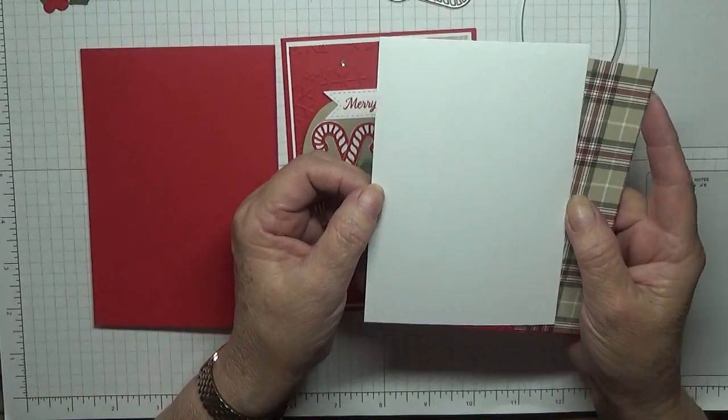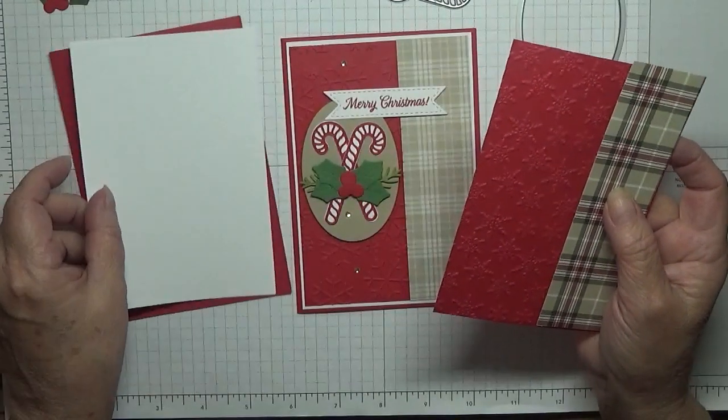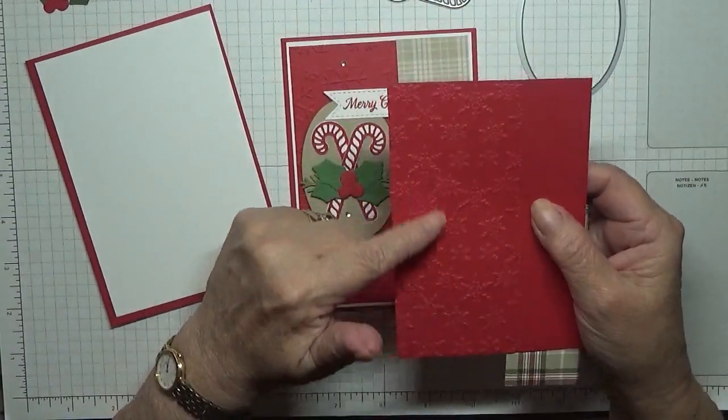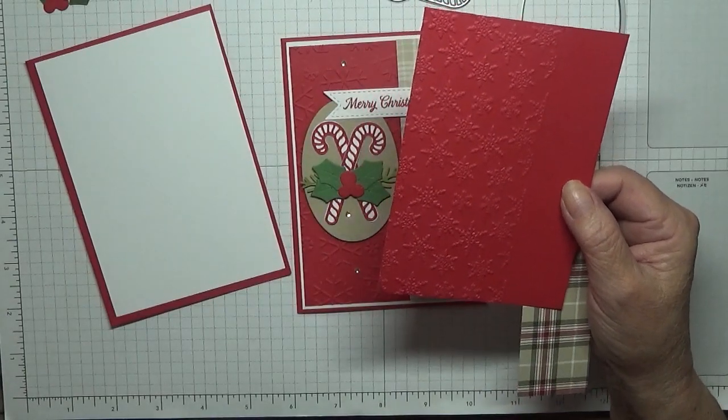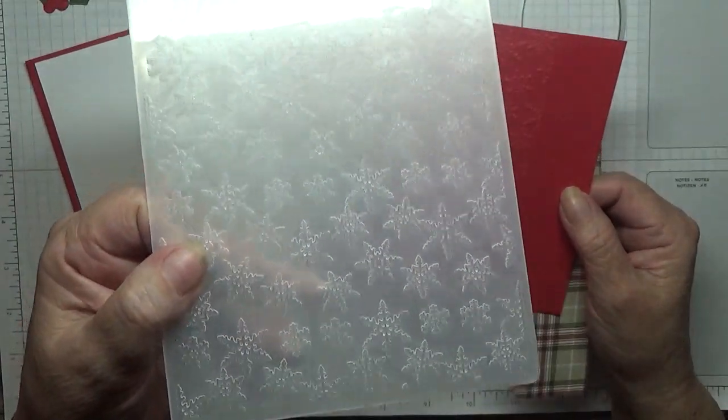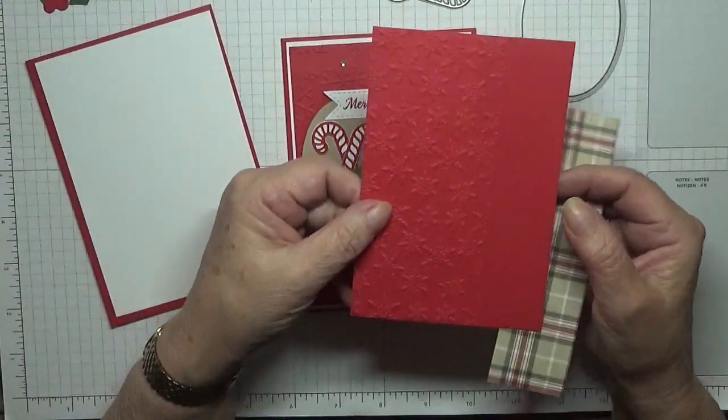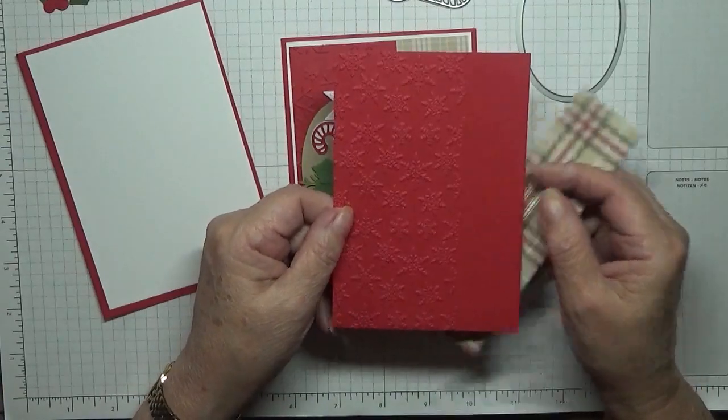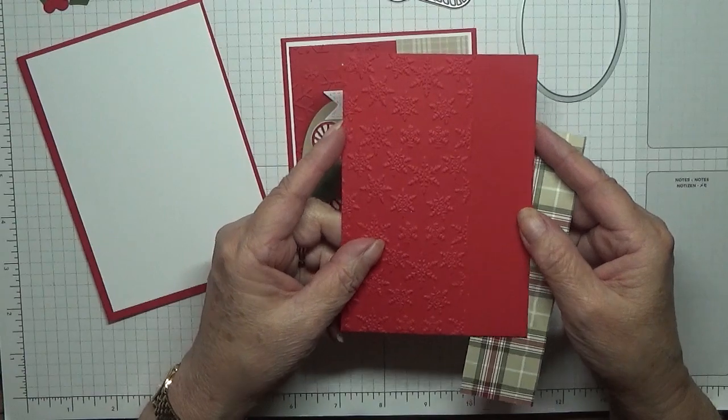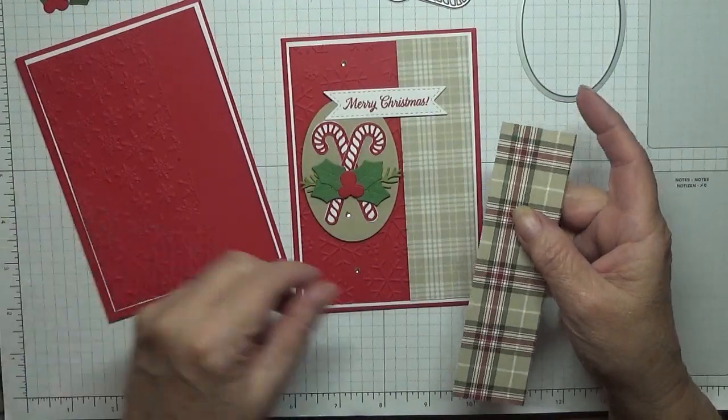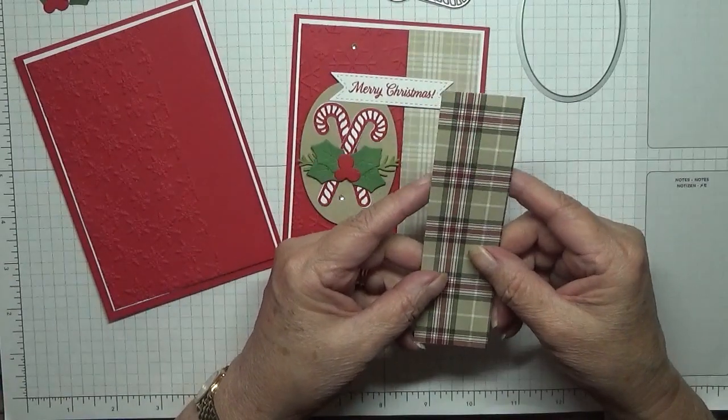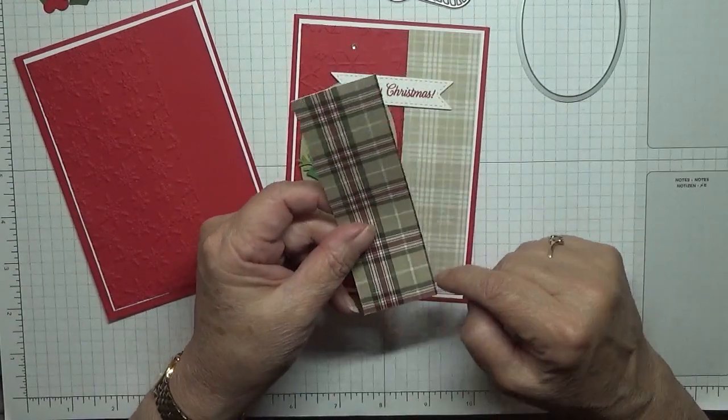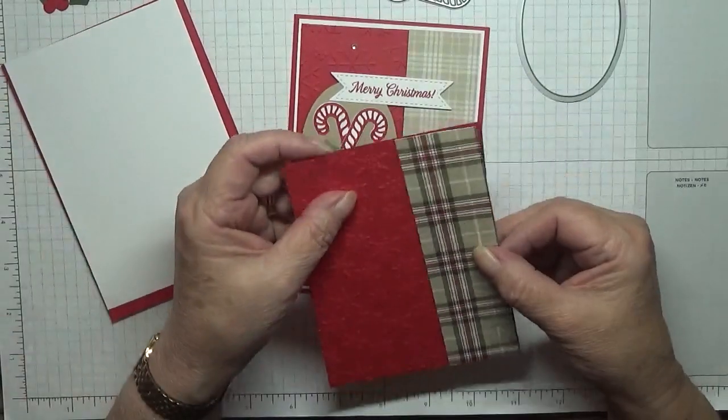I have a white piece of card at five and five eighths by three and seven eighths. I have a real red piece of card which I've already embossed with this embossing folder, just snowflakes, and I've embossed two thirds of it. It's got gold glitter on it and that's real red and that measures three and three quarters by five and a half which will sit on top. I've also got some of the plaid designer series paper from the Christmas catalog and that measures five and a half by one and a half and that will sit on the edge.